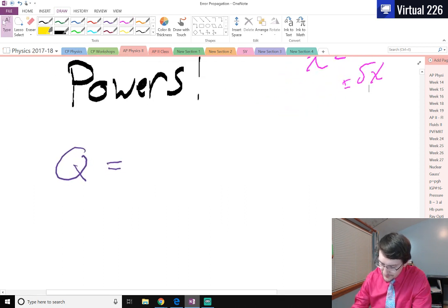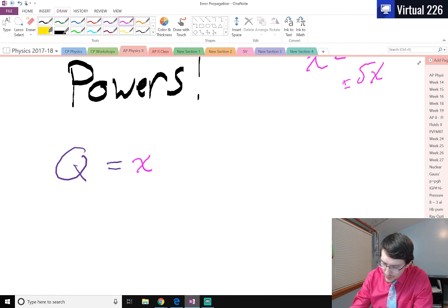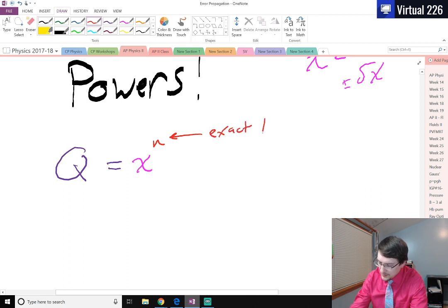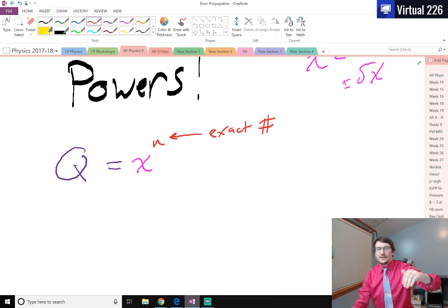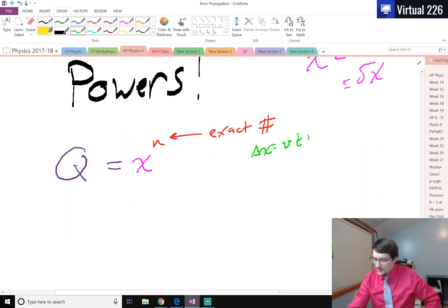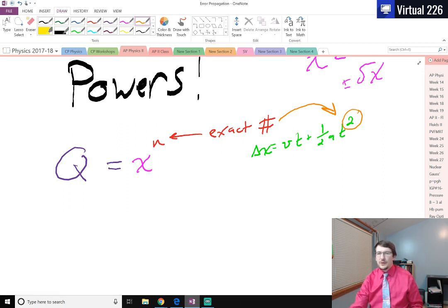x is some measurement. If you have some measurement and you know what power it's raised to, like that n right there, that is an exact number. That's not a measurement in and of itself. That's like a number you know exactly, like it's a square or it's a cube, like point zero to infinity. For example, if you had the equation delta x equals vt plus one half a t squared, this square right here, that's an exact number. So unless that equation has an exact number to it, you can't use this power method. But if it has an exact number, then we can use these powers.